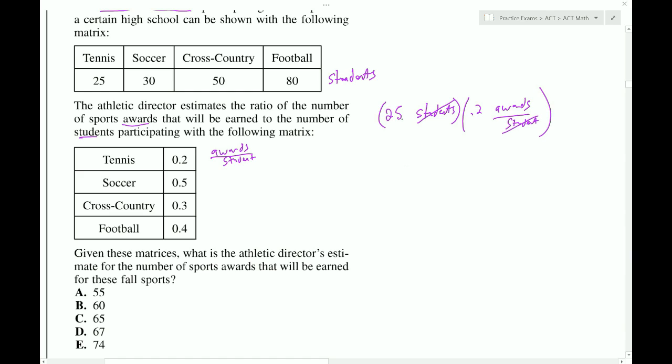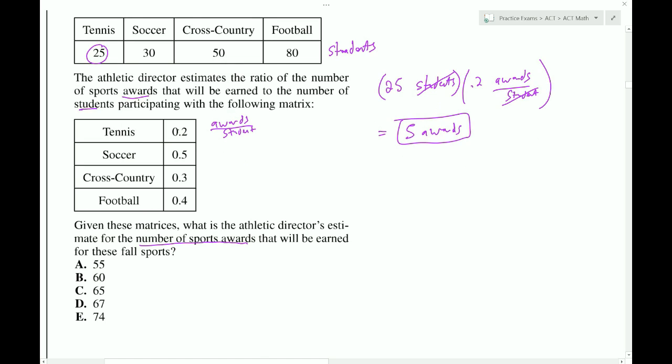We'll end up with 25 times 2 is 50. Move the decimal once is 5. That's 5 awards. So, since they're asking for the number of awards, this is how we're going to find it. By multiplying these pairs.